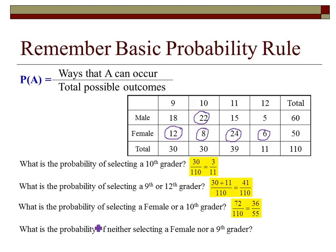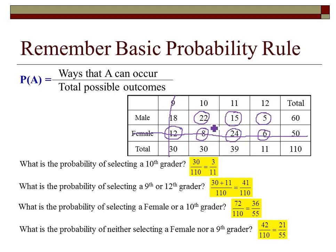For the next one: what is the probability of neither selecting a female nor a 9th grader? I want to eliminate the females and eliminate the 9th graders, then count what's left over. We have 22 plus 15 plus 5, giving 42 out of 110. Just counting the ways things happen is the easiest approach. Sometimes problems are this simple — just counting which ones work.